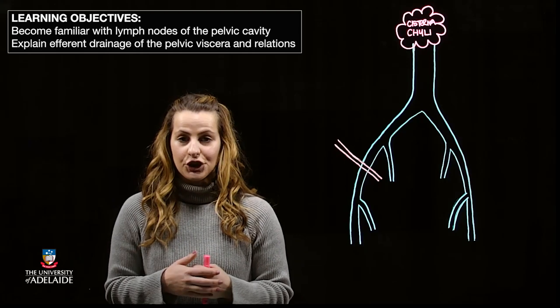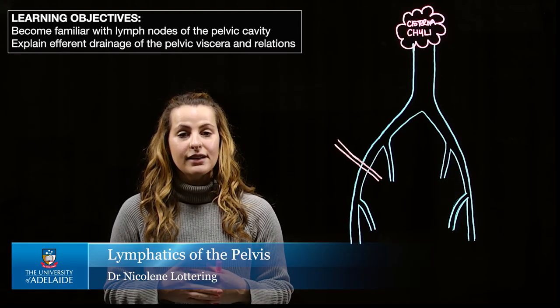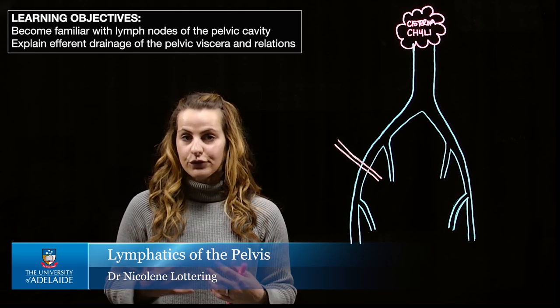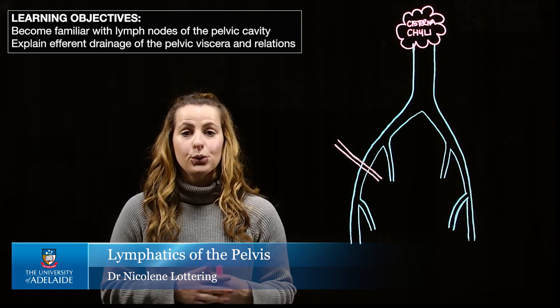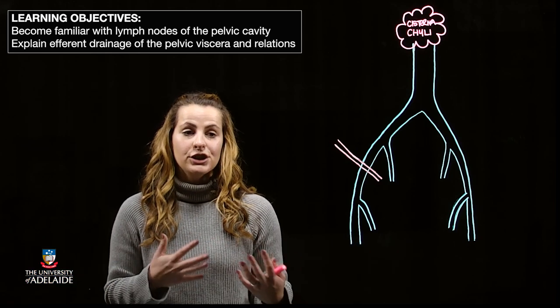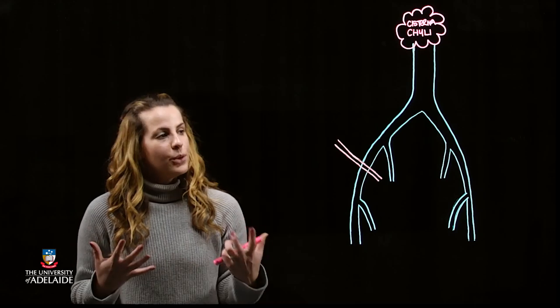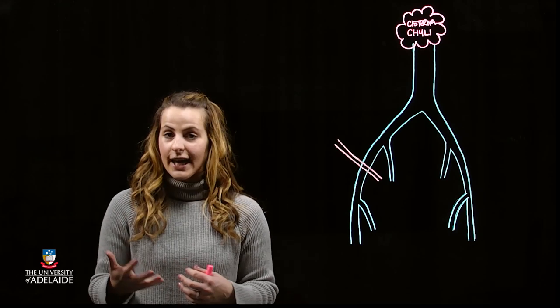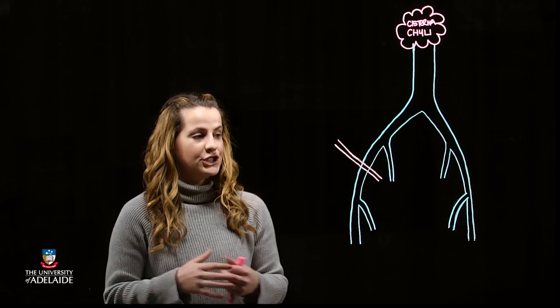The main learning objectives of this lightboard video are to be able to identify the lymph nodes associated with the pelvis, as well as explain the efferent drainage of major pelvic viscera and its relations. It's important to remember that the location of lymph nodes, as well as their subsequent drainage, is really going to follow the course of the major vasculature.